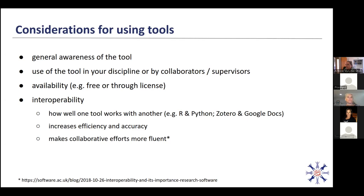Also consider how available the tool is — is it free and open source, or do you have to buy it or pay for a license? And what is interoperability like — how well does the tool work with other tools you may want to use in your workflow? For example, R and Python are becoming more interoperable, each having packages that enable you to work in one language within the other. Or, say, you want to write up your research using Google Docs and want a reference manager — we'll discuss reference managers shortly. So consider how well these tools work together. Are there bugs or issues that will prevent you from using both? Or should you look for another tool that works better for your needs?